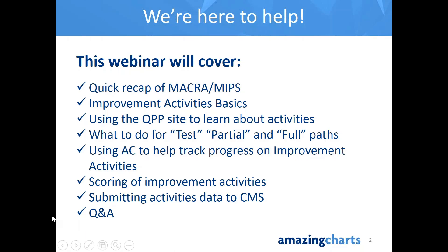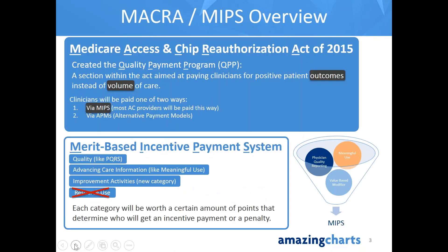We're going to show you the differences between the three levels of participation: test, partial, and full — also referred to as pass. We'll demonstrate how you use Amazing Charts to track your progress on improvement activities, review how improvement activities contribute to your composite score, and then discuss submissions. It's by far the easiest of the three performance categories to explain — I don't think you'll have any problem receiving your 15 points for this category with minimal effort.